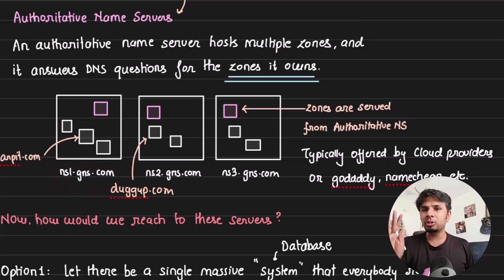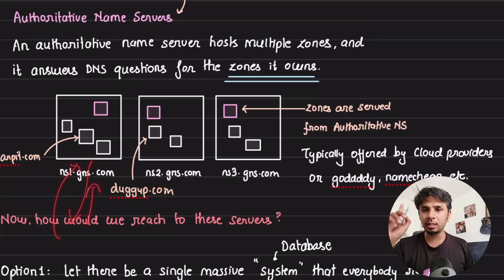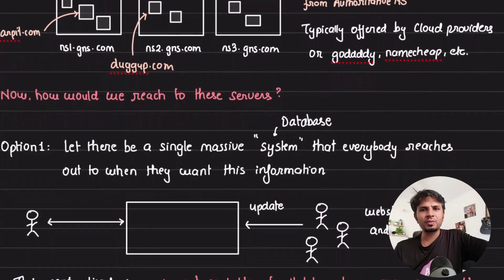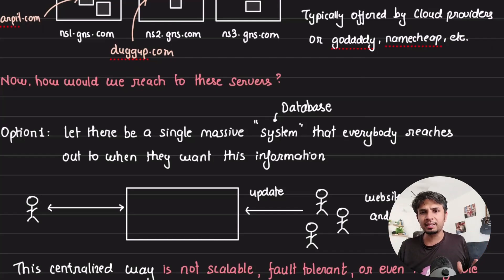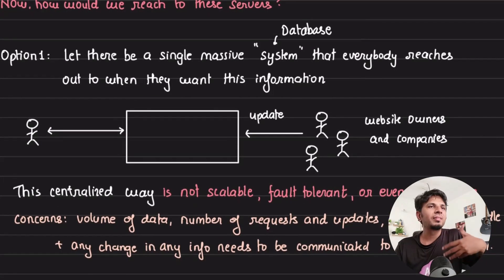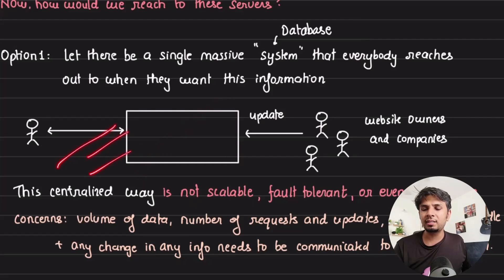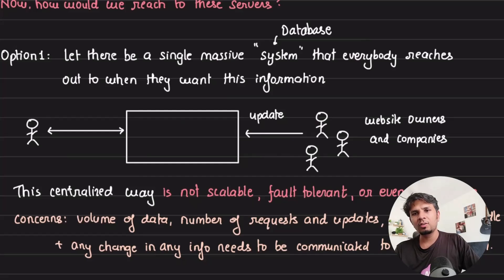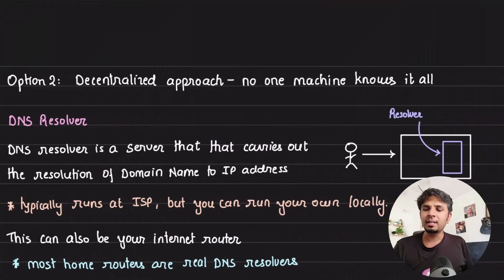If we know the authoritative name server's name, it will give us the record we're looking for — but how does your browser know this? It cannot possibly know for all domains. One approach would be a single gigantic system containing all possible domains and subdomains with all their mappings. But that's millions and billions of entries — a single system that is not scalable, not fault tolerant, and not manageable given the sheer volume of reads and writes.